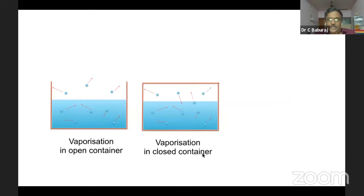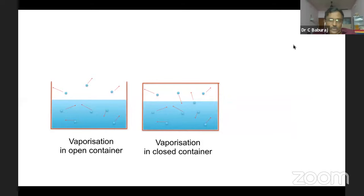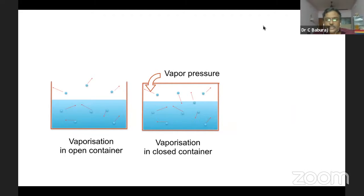In a closed container, the molecules escaping into the air above reach an equilibrium after some time — some molecules go back, some jump out, and finally an equilibrium is reached. At that point, the upper part of the container is saturated with vapor. The pressure exerted by these vapors is known as vapor pressure. Once it is saturated, you call it saturated vapor pressure.